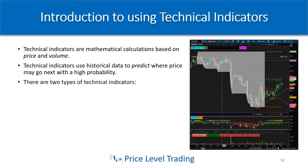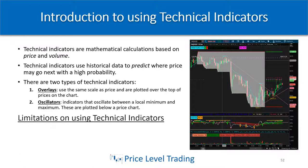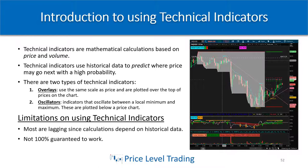There are two types of technical indicators. The first is overlays — these indicators use the same scale as price and are plotted over the top of prices on the chart. The other type are oscillators, which oscillate between a local minimum and maximum, otherwise known as zero and one, or could also be a negative to a positive number, and these are plotted below a price chart.